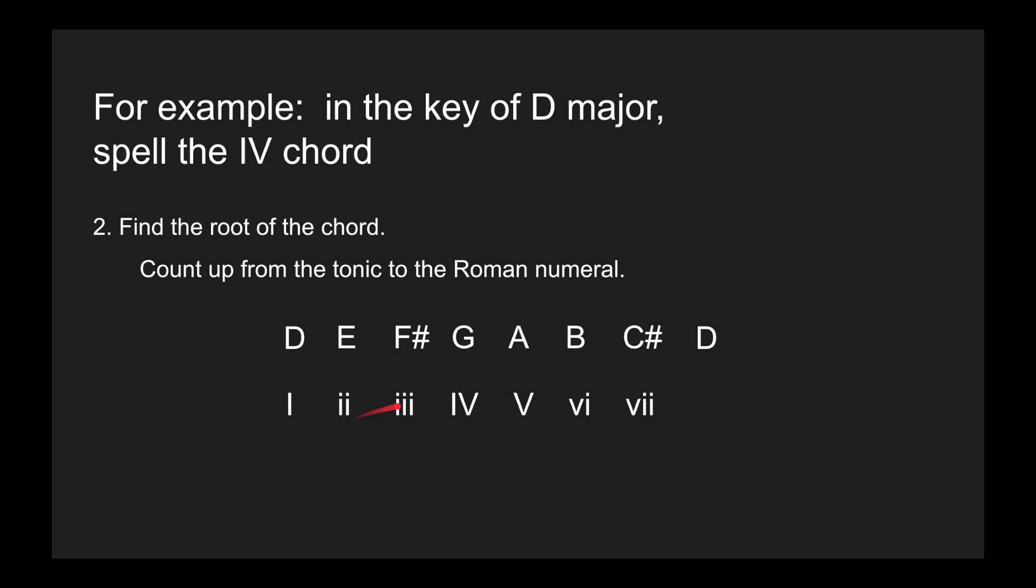One before five is four. So let's go one, two, three, four. So now I know that it's some kind of G. G is the root of the chord. The root of the chord is the note that gives the chord its name, so the root is G.